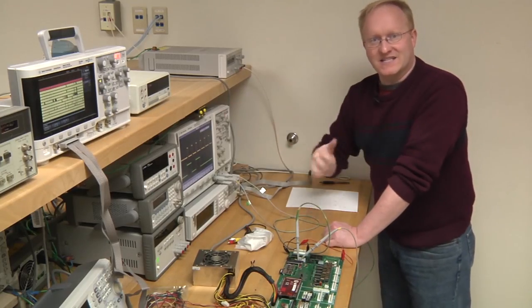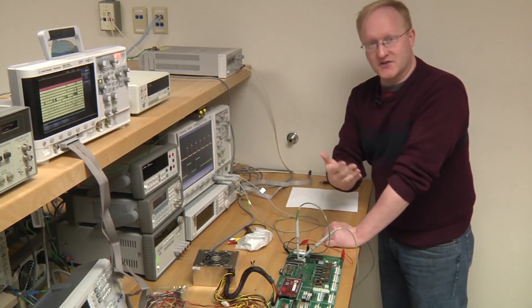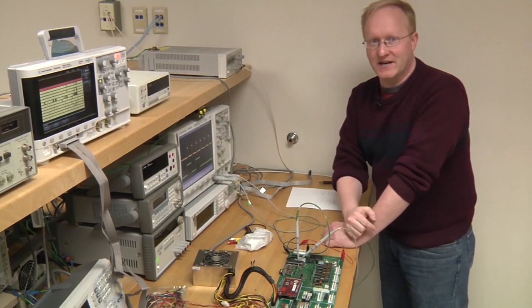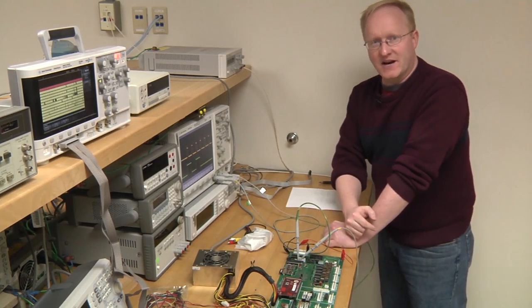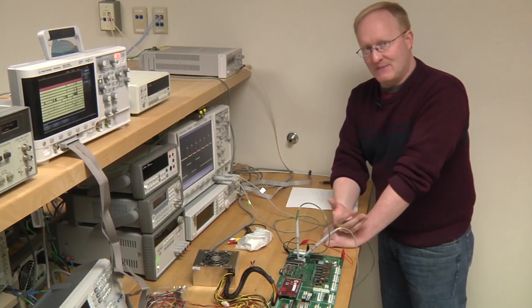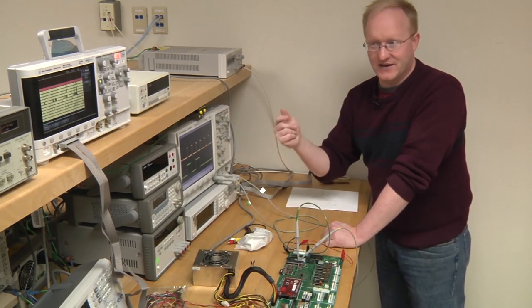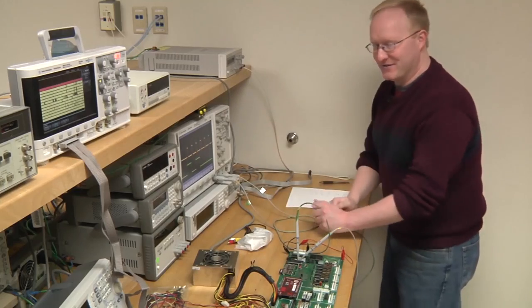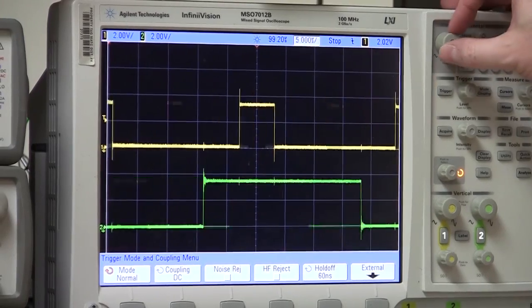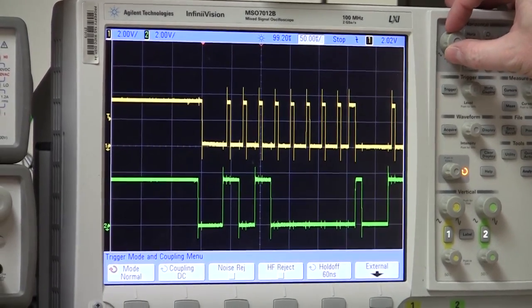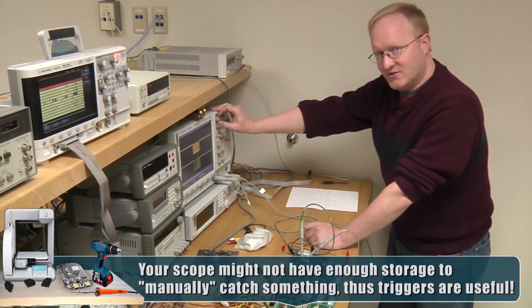Before, we were looking at clocks that were continuously going for the screen. It was constantly clocking out data. With an I squared C write, you don't know when it's going to happen, so by using the trigger function of your oscilloscope, you can catch it in the blink of an eye faster than you could possibly do with your fingers, and then have a chance of looking at it.